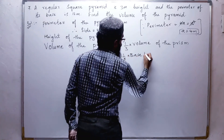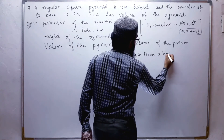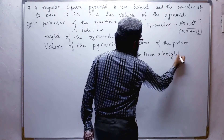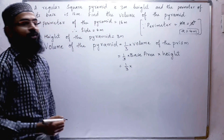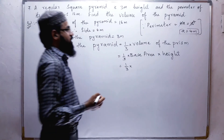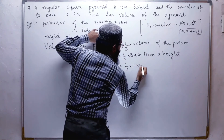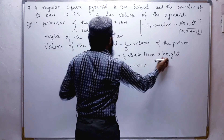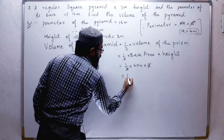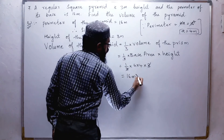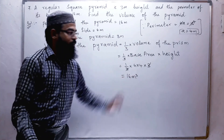So, 1/3 times base area times height. The base area is the area of the square, which is side times side, so 4 times 4. The height is 3 meters. The 3s cancel, giving us 4 times 4 equals 16 cubic meters. Since it is a volume, we write cubic meters.